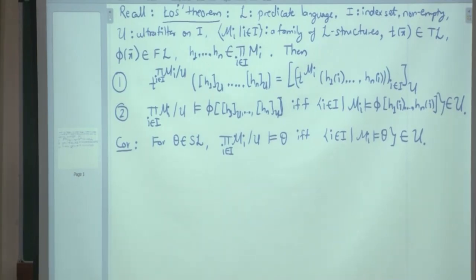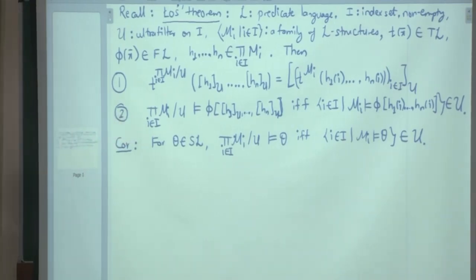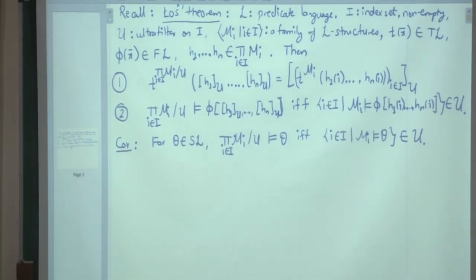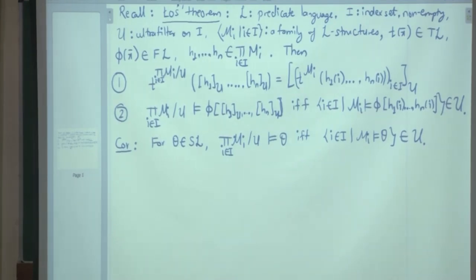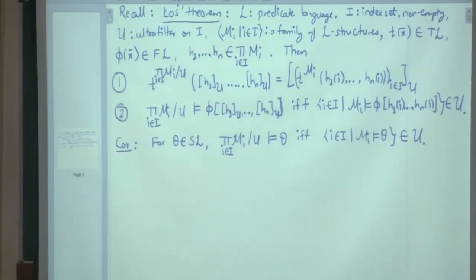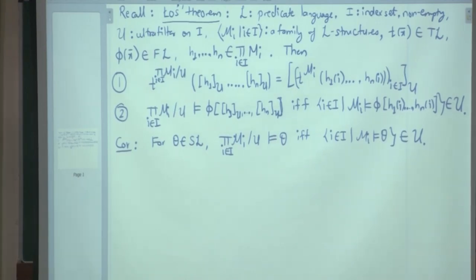The most important result is that for all formulas, a formula is true in the ultra product structure at a particular tuple of equivalence classes of choice functions, if and only if the same formula is true in a large set of indices at the component tuples. As a corollary, a sentence is true in the ultra product structure if and only if the sentence is true in a large set of index structures.